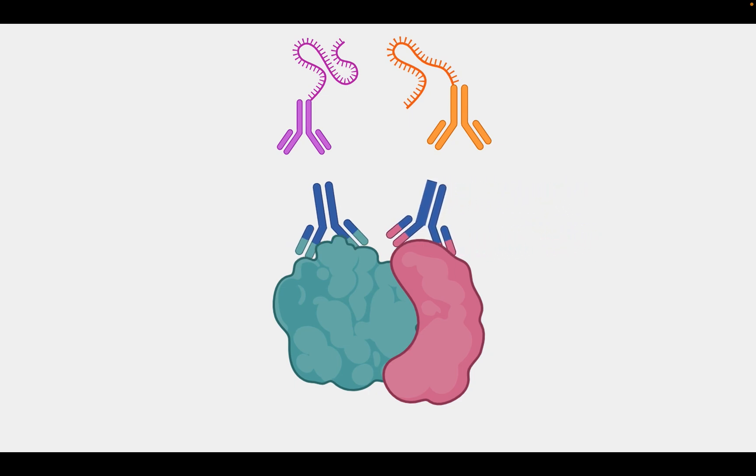The primary antibodies are then recognized by secondary antibodies that are pre-conjugated to the so-called PLA probes, made up of single-stranded oligonucleotides.